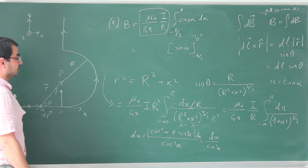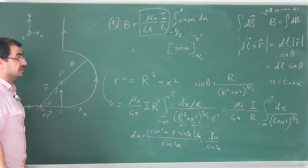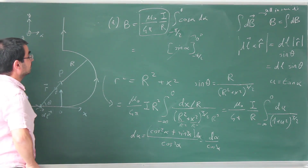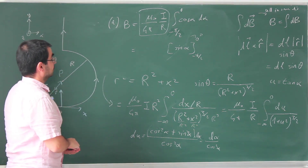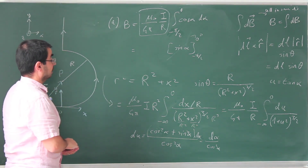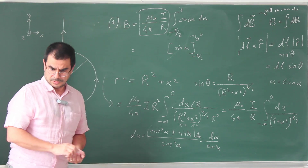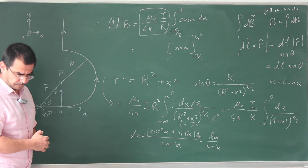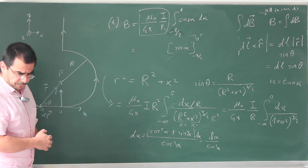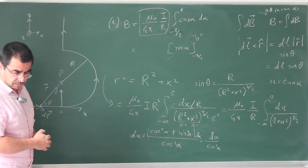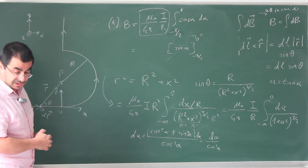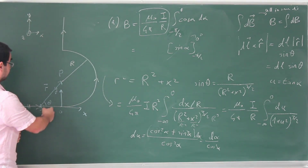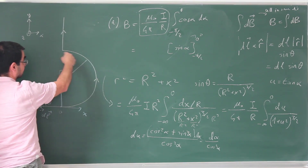It's a little involved, but most of the difficulty is in the mathematics and integration, which is hopefully covered in first-semester calculus. For part B, using Biot-Savart law, calculate the magnitude of magnetic field at point P due to the semicircular section.